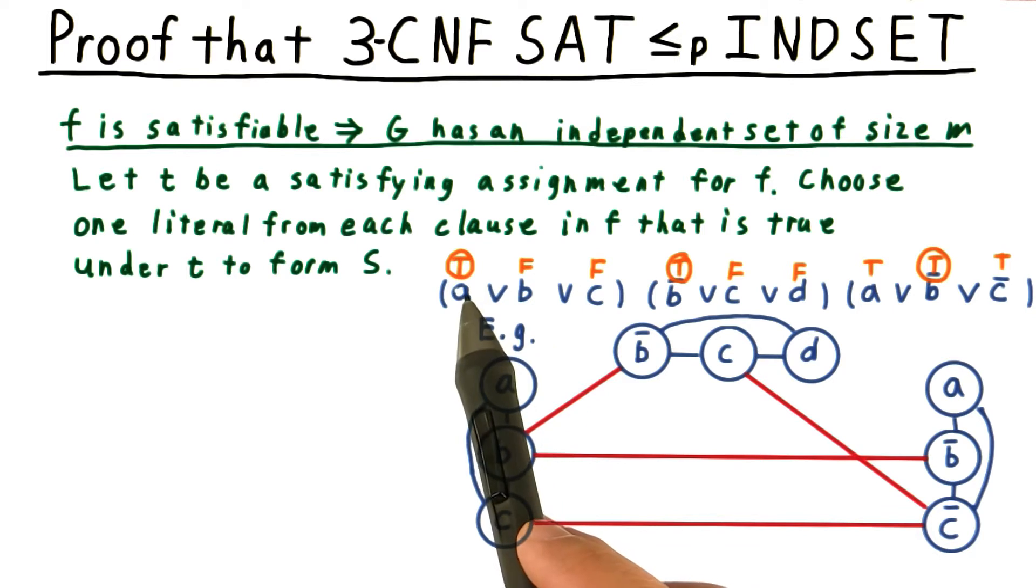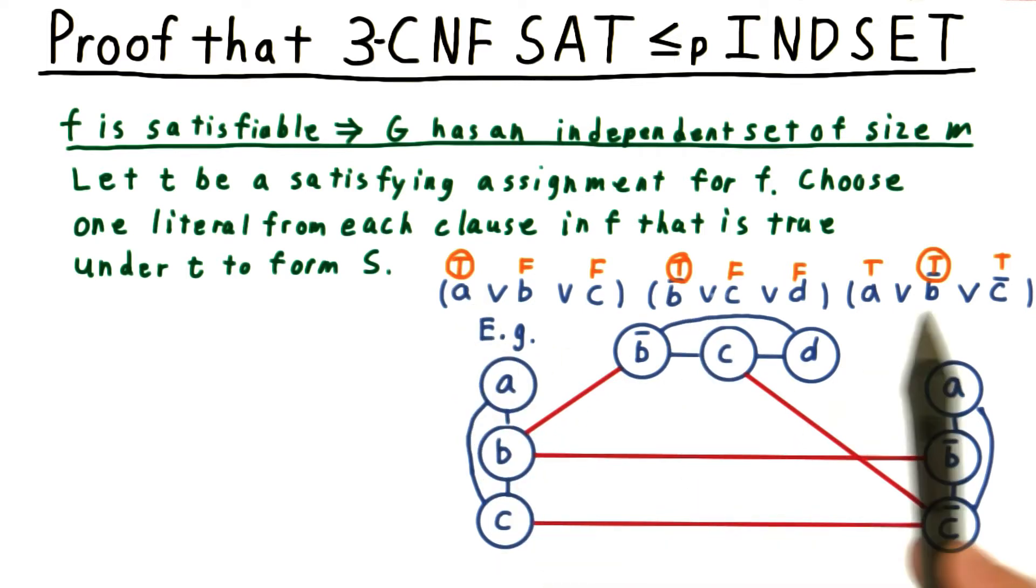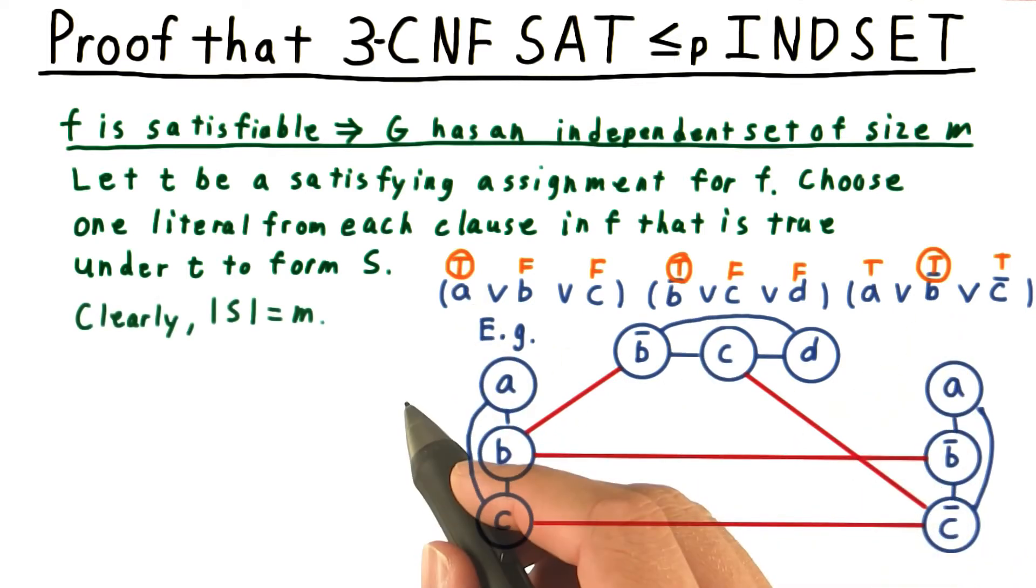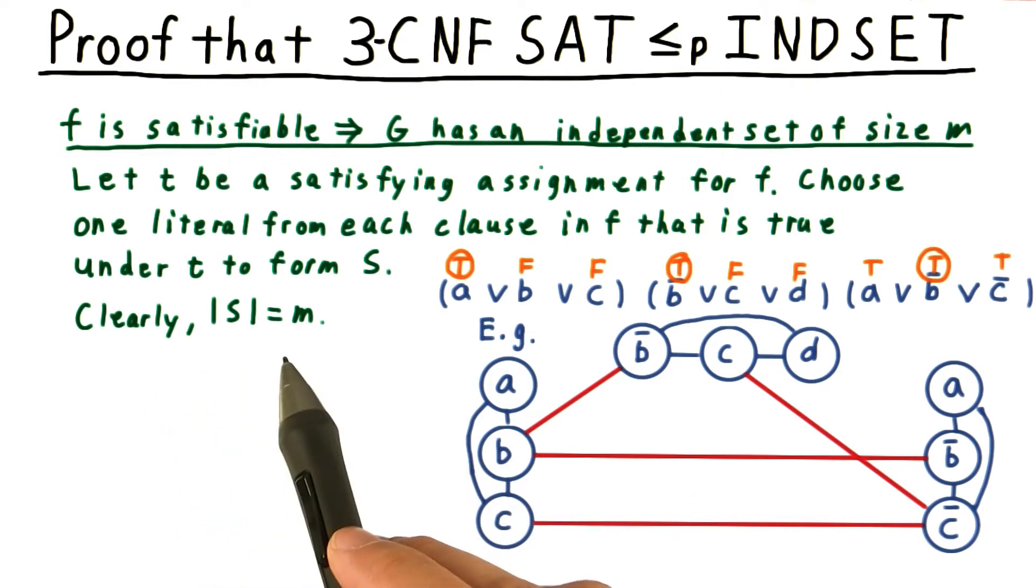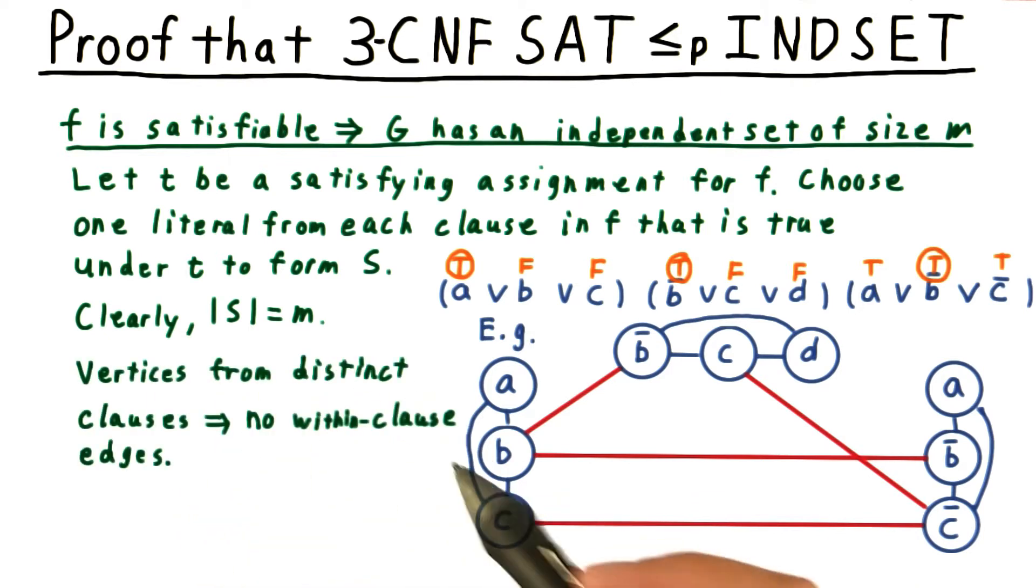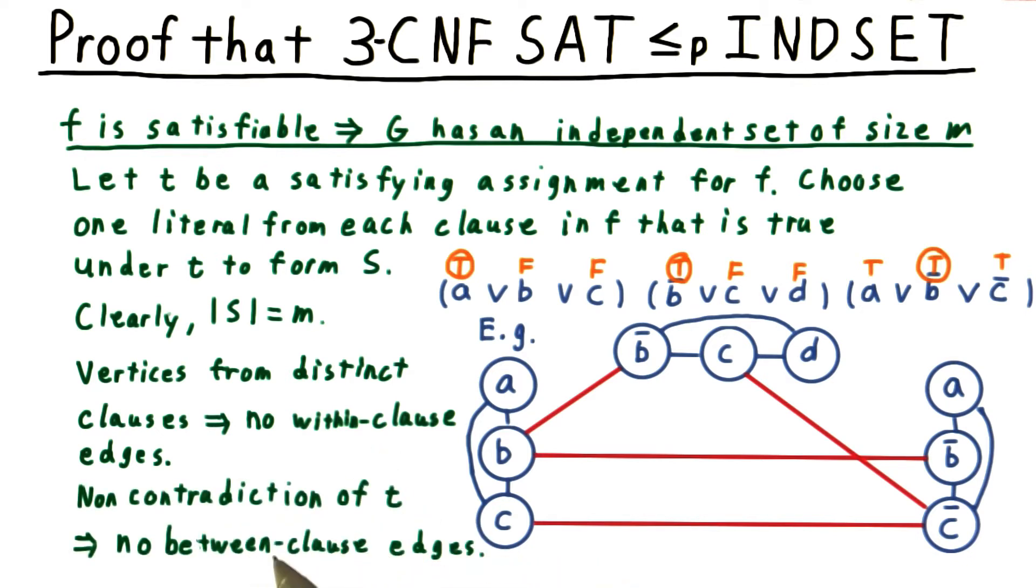So in our example, I might choose this A, this B bar, and this B bar here. Clearly, the size of this set is M, the number of clauses. Because the vertices come from distinct clauses, there can't be any within-clause edges. And because the truth assignment T doesn't contradict itself, there can't be any contradiction or between-clause edges either. Therefore, S must be an independent set, and indeed it is in this example.